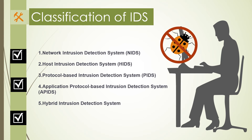The third type is Protocol-based Intrusion Detection System (PIDS), comprising a system or agent residing at the front end of the server, controlling and interpreting the protocol between a user device and the server. It secures the web server by regularly monitoring the HTTPS protocol stream and accepting the related HTTP protocol. Since HTTPS is unencrypted before entering the web presentation layer, this system resides at that interface to use HTTPS monitoring.